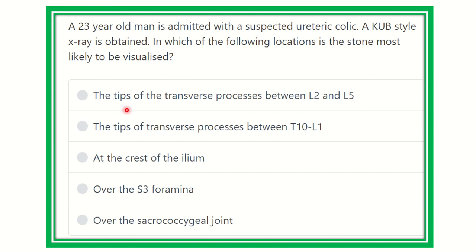Here are the options: the tip of the transverse process between number 2 and number 5; the tip of the transverse process between thoracic 10 and number 1; the crest of the ilium; over the S3, that means the sacral foramina; and over the sacrococcygeal joint.